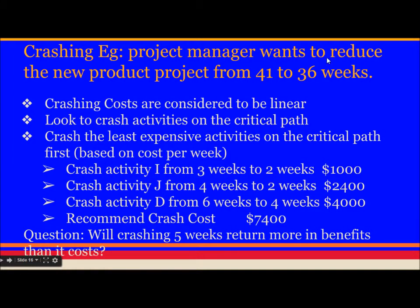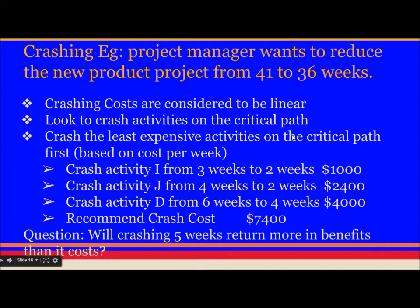Crashing example: the project manager wants to reduce the new product project from 41 to 36 weeks. Crashing costs are considered to be linear. When doing crashing or reducing the timeline, we first need to crash the schedule of the critical path. Crash the least expensive activities on the critical path. Since we need to reduce the number of weeks by 5, we list all activities on the critical path and find which ones have the least cost per week.